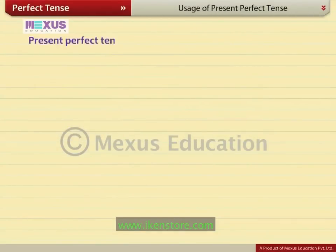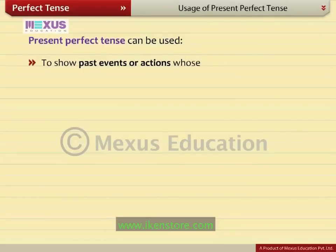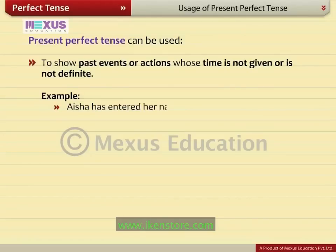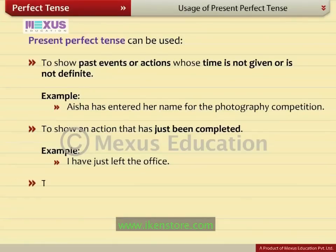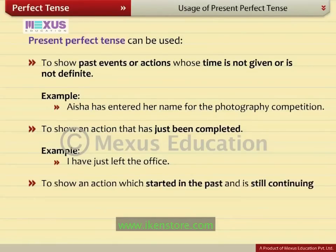Present perfect tense can be used to show past events or actions whose time is not given or is not definite. For example, Aisha has entered her name for the photography competition. To show an action that has just been completed — for example, I have just left the office. To show an action which started in the past and is still continuing in the present — for example, they have lived here for years.